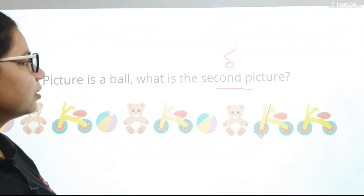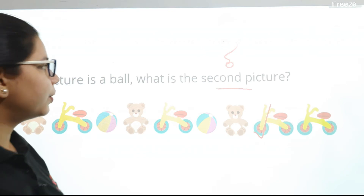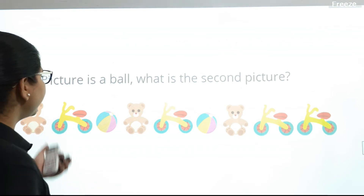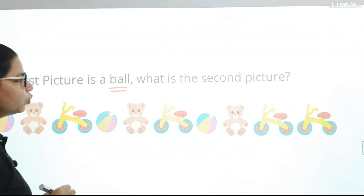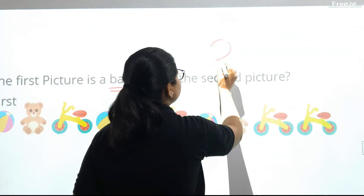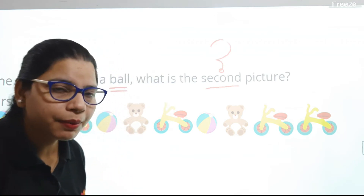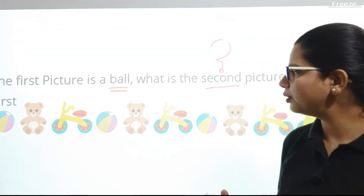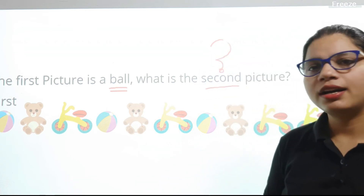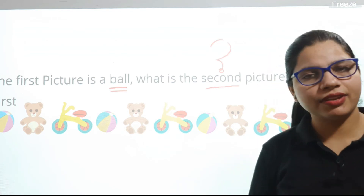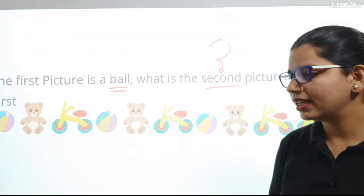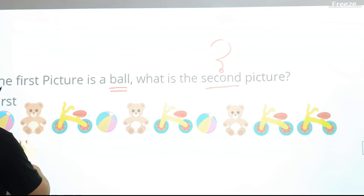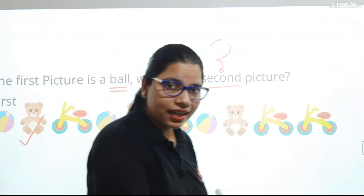Next question: the first picture is a ball. What is the second picture? I'll count to ten and you have to answer fast. One, two, three, four, five, six, seven, eight, nine, ten. First, second — this teddy bear is the second picture!